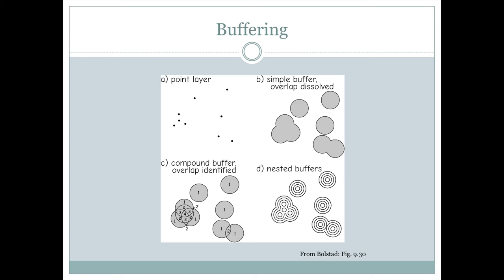Another thing we can do when we buffer is we can make nested buffers. So maybe we want to know what area is 10 meters away and what area is 20 meters away and what area is 30 meters away and what area is 40 meters away. So here we would get four overlapping polygons and that's sometimes called a nested buffer.